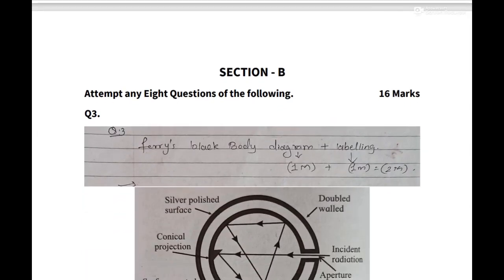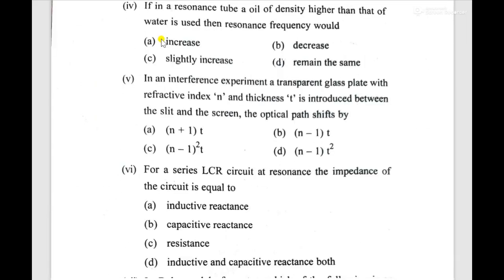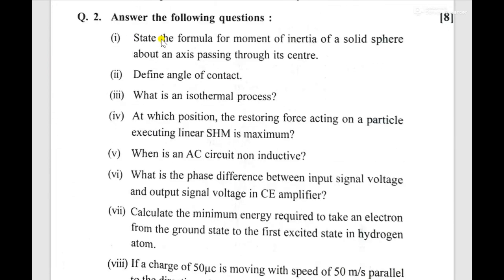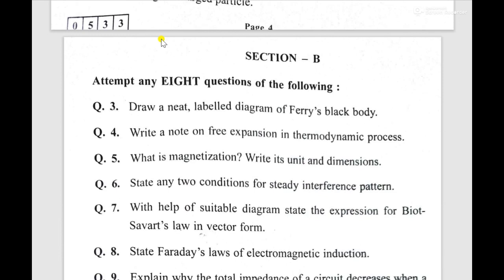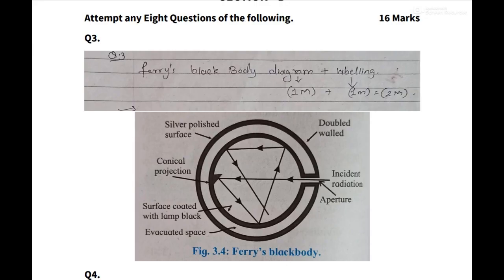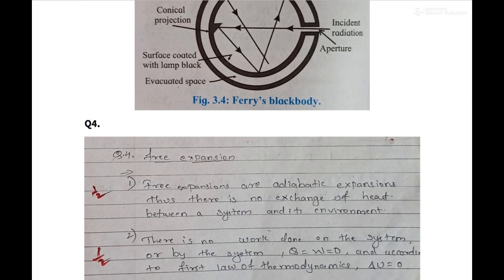From here I will discuss Section B — attempt any eight of the following questions. Question number two: draw a neat labeled diagram of Ferris black body. This section contains two-mark questions. So the bifurcation is one mark for diagram and one mark for labeling. With all proper labellings you will get one mark and one mark — two marks total.